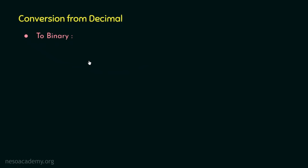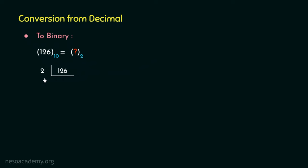We will learn the approach by finding out the equivalent binary of the decimal number 126. The conventional approach is to take the decimal value first and then perform integer factorization using the base of the number system to which we would like to convert. Since we are looking for the equivalent binary number, we will perform the integer factorization with the value 2. In integer factorization, we keep the record of the remainder, and the subsequent factorizations are performed only on the quotients.